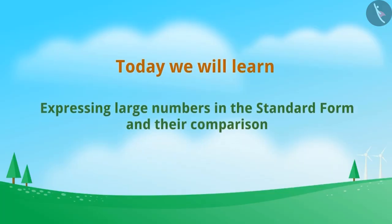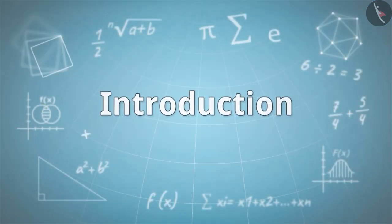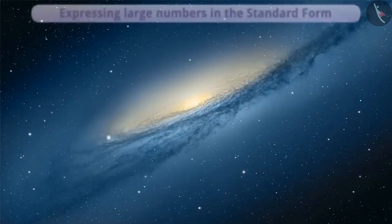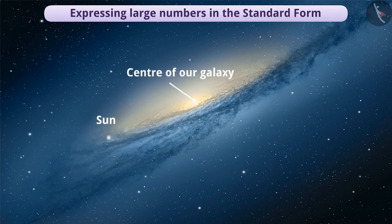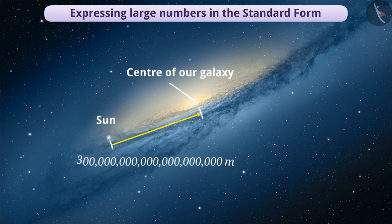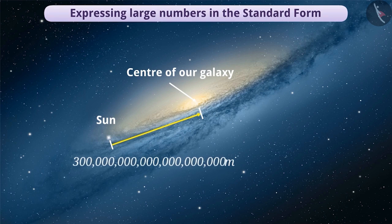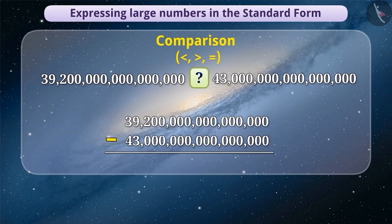Today, we will learn about expressing large numbers in the standard form and their comparison. Do you know how far the sun is located from the centre of our Milky Way galaxy? This number is as difficult to read as it is for a man to reach the centre of the galaxy. Such large numbers are not only difficult to read but also difficult to write, understand, compare and do any sort of mathematical operation upon them. It is important that we express such numbers in a shorter and easier form.